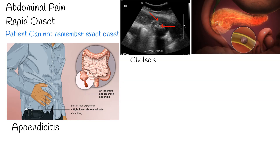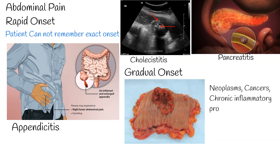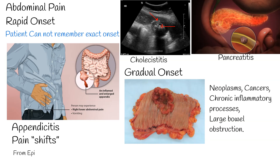If pain gradually develops over hours or days, and the patient can only remember the day or week when the pain began, such pain can be caused by neoplasms, chronic inflammatory processes, and large bowel obstruction. If pain shifts from the original site of onset to another location, it is most commonly associated with appendicitis — for example, it can begin as epigastric pain and then be replaced with right lower quadrant pain.